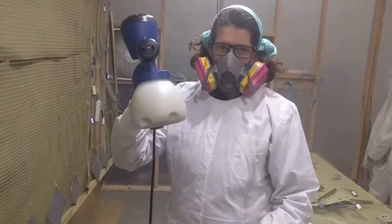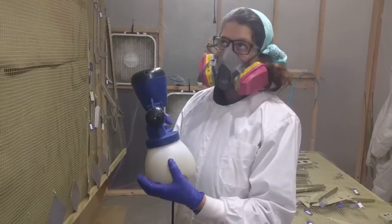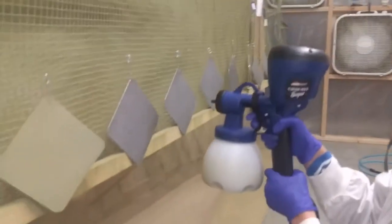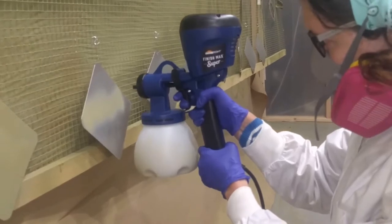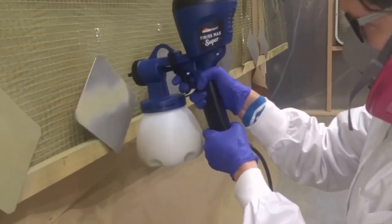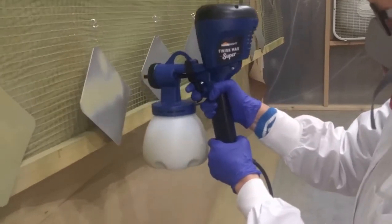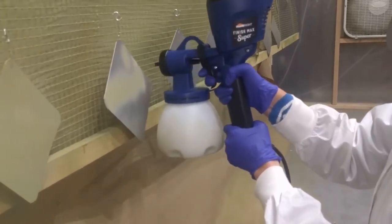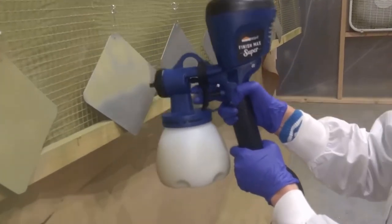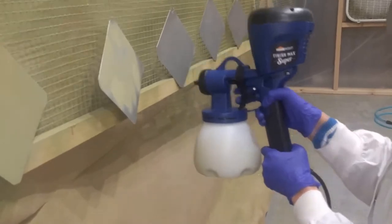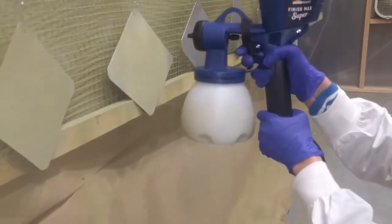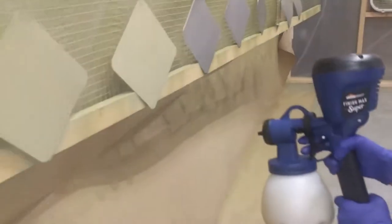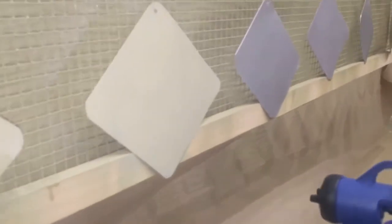We're going to start a spray with the Home Right Finish Max, 1.5mm nozzle. Okay, let's check it out. Uh oh, I think we have... I don't know. It looks like sometimes it just runs out of paint. I mean, maybe it's because we didn't put enough in it.